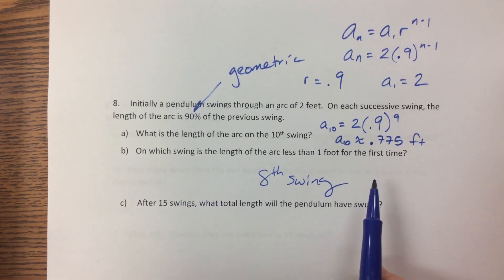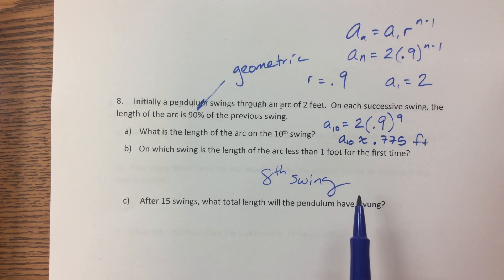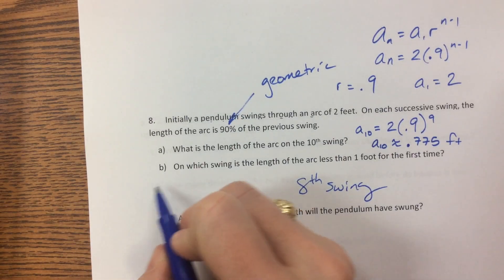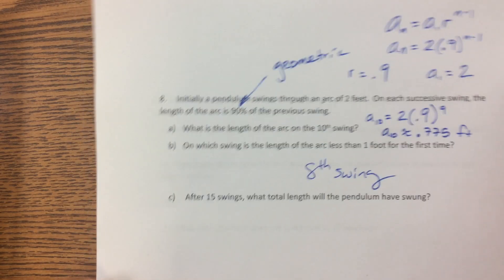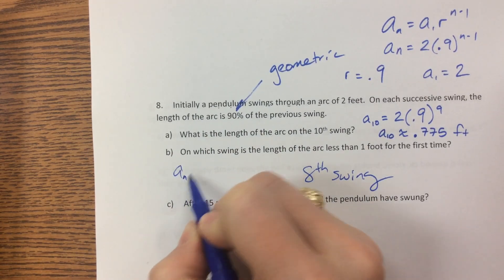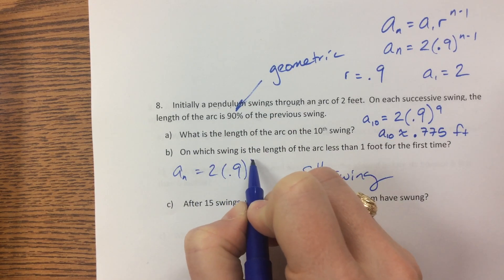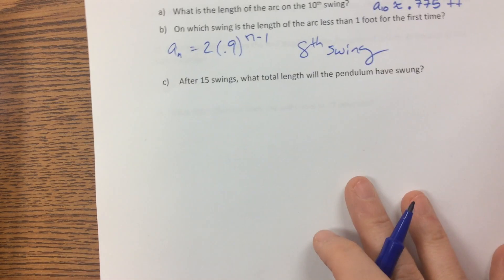You might have to show more work if you didn't have a calculator, or at least show me how you set it up. We used a sub n was 2 times 0.9 to the n minus 1.